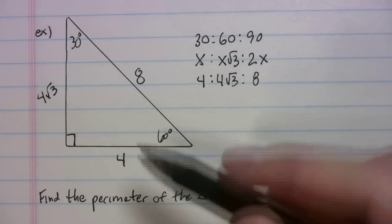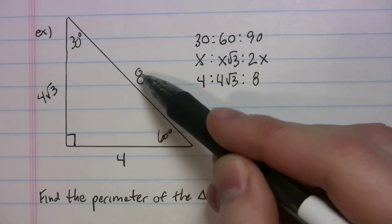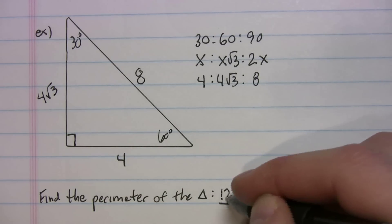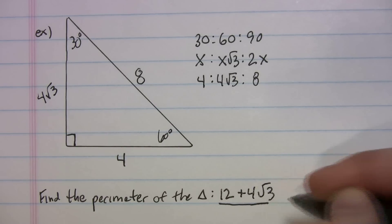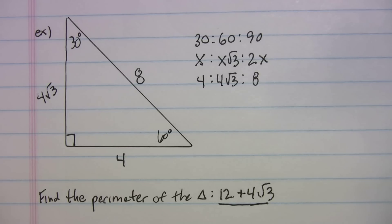And what is the problem we want to know? What is the perimeter of the triangle? So we're just going to add up all the sides. 8 plus 4, 12 plus 4 radical 3. Not much we can do with that expression after that. That's in simplest form. So this was kind of an easy one with the 30-60-90.